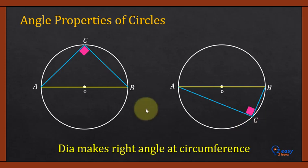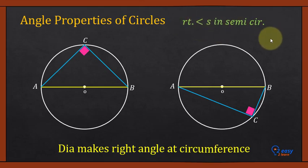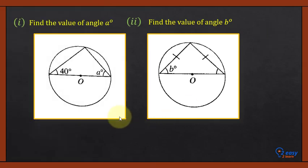We can say right angle in semicircle. Other name of this property is right angles in semicircle. Let's solve few exam questions by applying this angle made by the diameter is always 90 degrees at the circumference.